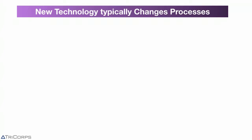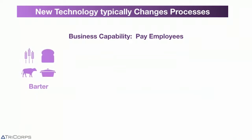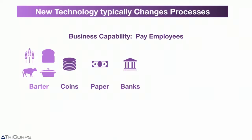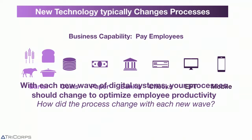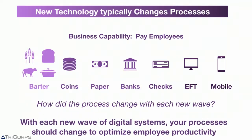One of the key takeaways is that anytime there's a new wave of technology, it will typically change your processes. You shouldn't automate a bad process. If you go back over 1,000 years, we would barter to pay employees, then coinage, then paper, then banks, then checks, and now electronic funds transfer and mobile. Every time a new wave of technology is introduced, the process and the order of steps does change. So anytime there's a new wave of technology, your processes should probably change to really improve the productivity of your organization — because most likely, the technology will enable something new.